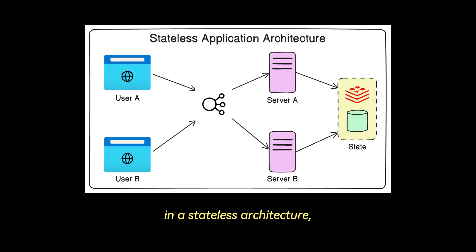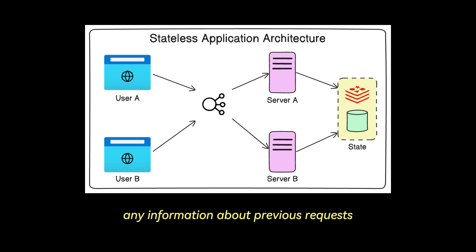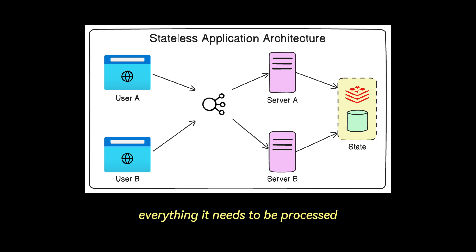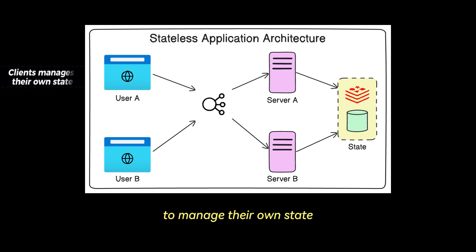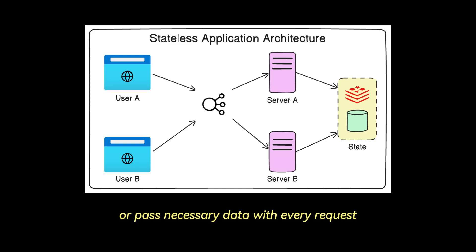On the other hand, in a stateless architecture, every request stands alone. The server does not store any information about previous requests. Each one has to carry everything it needs to be processed. This leads to simpler server interactions, but requires client applications to manage their own state or pass necessary data with every request.